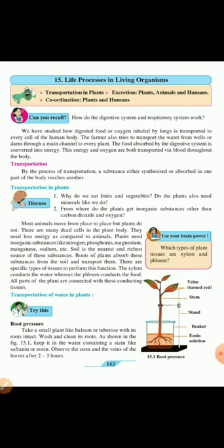Now, let us continue with this chapter. We have studied how digested food or oxygen inhaled by lungs is transported to every cell of the human body. The farmer also tries to transport water from wells or dams through a main channel to every plant. The food absorbed by the digestive system is converted into energy. This energy and oxygen are both transported via blood throughout the body.